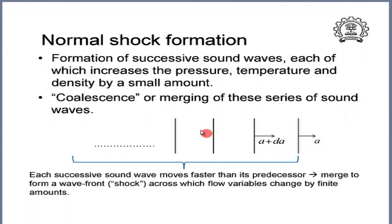Going back to the slide: what is shown is a sequence of sound wave fronts. The first one is moving with speed A, the next one behind it is at an elevated speed A plus delta A. Successive sound wave fronts are going to be moving faster and faster, each with a certain delta P, delta T, delta rho associated with it. Since each successive sound wave moves faster than its predecessor, the latter waves will eventually overtake the former ones. All of these waves merge together so that a thin wave front is formed across which properties change by finite amounts — this is what we call a shock wave front.